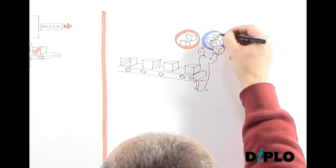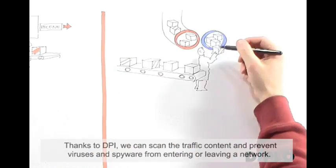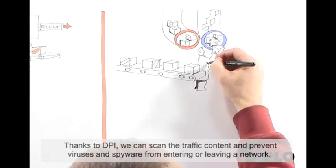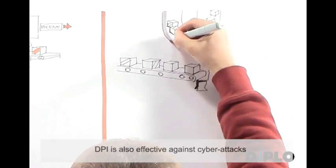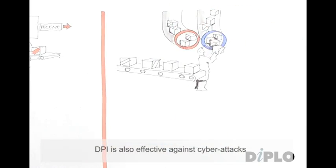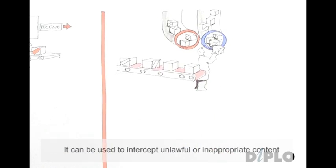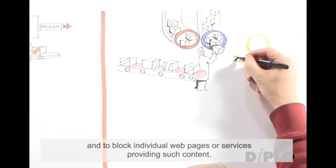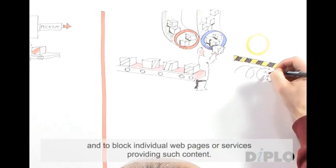Thanks to DPI, we can scan traffic content and prevent viruses and spyware from entering or leaving the network. DPI is also effective against cyber attacks. It can be used to intercept unlawful or inappropriate content and block individual web pages or services providing such content.